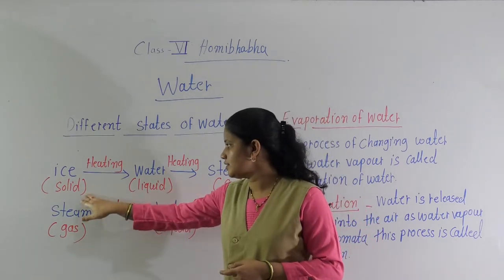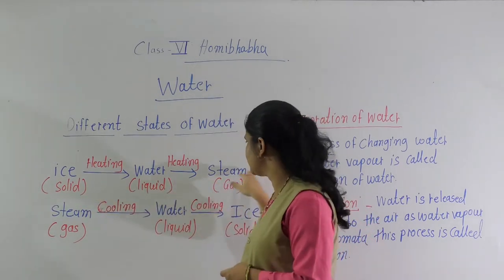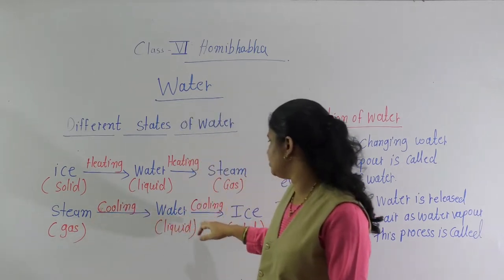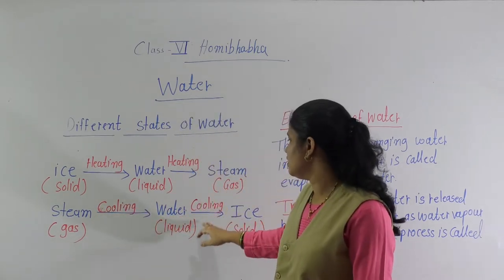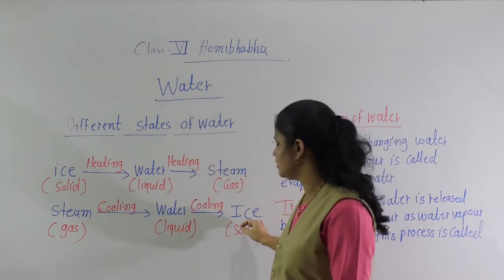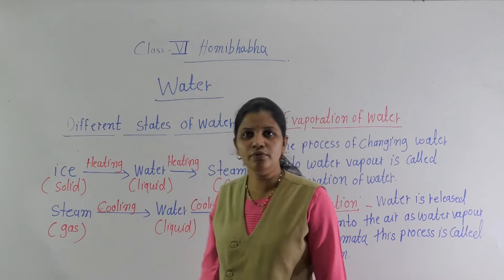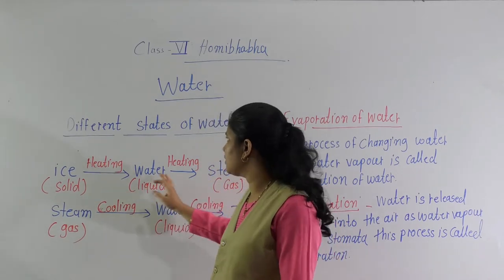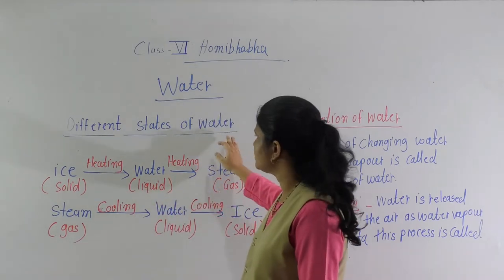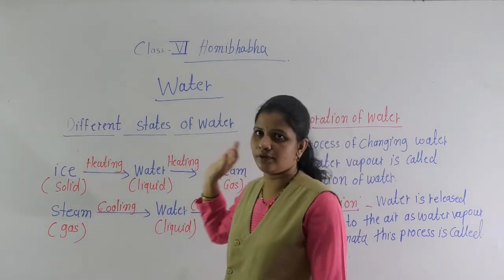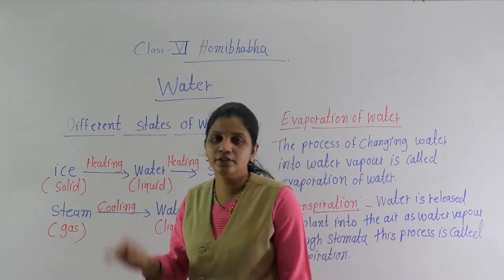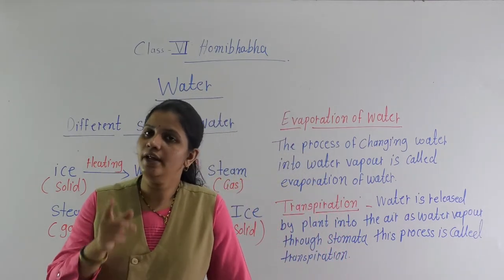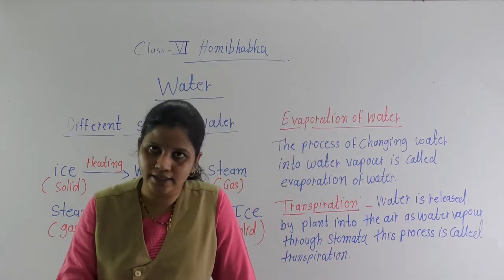So this is a continuous reversible process: ice, water, steam — then steam on cooling converts into water, and on further cooling it converts back into ice. These three are the examples of the three states of water. What are the three states of water? Solid, liquid and gas.